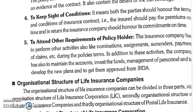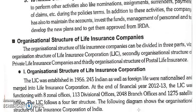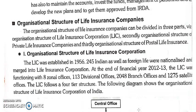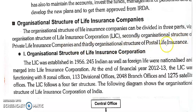The next topic is the organizational structure of life insurance companies. We divide this into three parts: organizational structure of LIC, organizational structure of private life insurance companies, and organizational structure of postal life insurance companies. We will study them in the order: postal, LIC, then private.